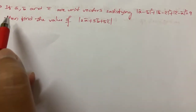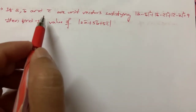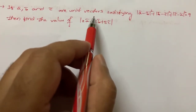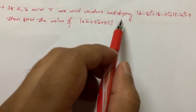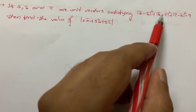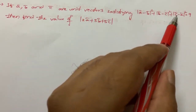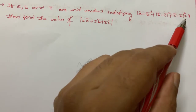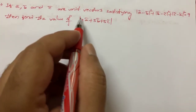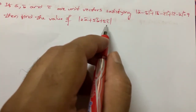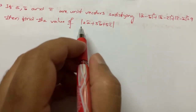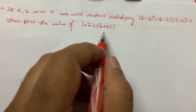Let us look at this problem. If a-bar, b-bar, c-bar are unit vectors satisfying |a - b|² + |b - c|² + |c - a|² = 9, then find the value of the modulus of 2a + 5b + 5c.